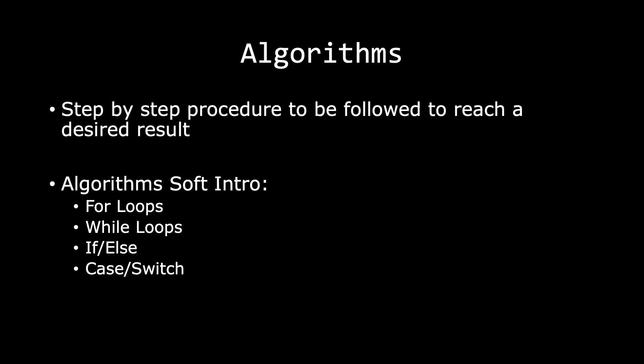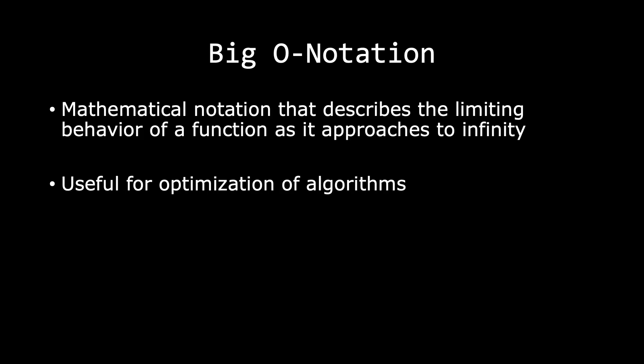A for loop inside of another for loop is an algorithm, and it's great if you want to iterate over a 2D array. To iterate over a 3D array, you use a for loop inside a for loop, which is inside yet another for loop.